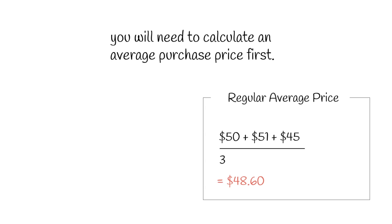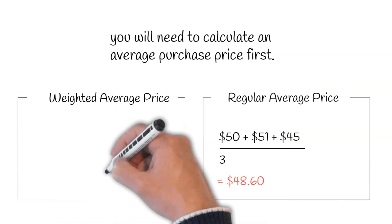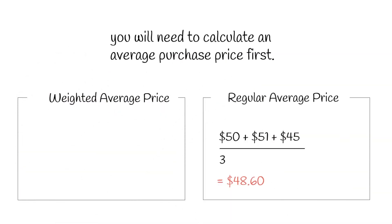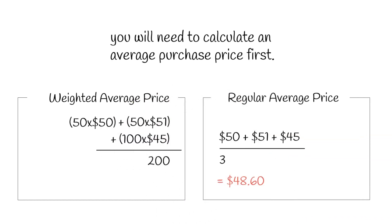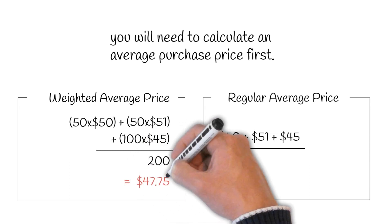However, this regular average price is not an accurate indicator of your item distribution. So, we should discard this and instead calculate what is known as the weighted average price. The weighted average price of all 200 pairs of sneakers you have on hand before the sale is equal to the value of the January lot, plus the value of your February lot, plus the value of your March lot, divided by 200. This makes it 50 times $50, plus 50 times $51, plus 100 times $45, divided by 200 — or in other words, the total sum of $2,500 plus $2,550 plus $4,500, divided by 200, which is $9,550 divided by 200, which equals $47.75.